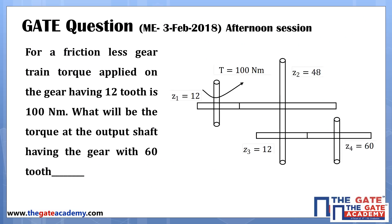For a frictionless gear train, the torque applied on the gear having 12 teeth is 100 Nm. What will be the torque at the output shaft having a gear with 60 number of teeth?